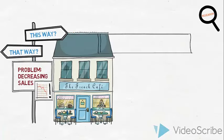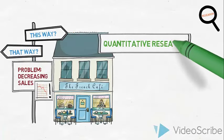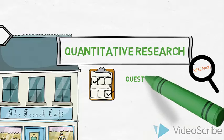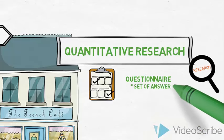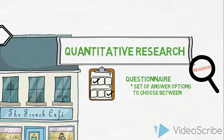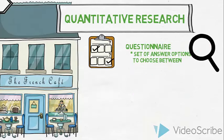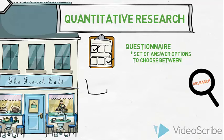Now let us introduce a few types of quantitative research. The French café could design a questionnaire with a set of predefined answers for the respondents to choose between. They could, for example, ask the respondents to indicate to what extent they are satisfied or dissatisfied with the service they receive in the café.